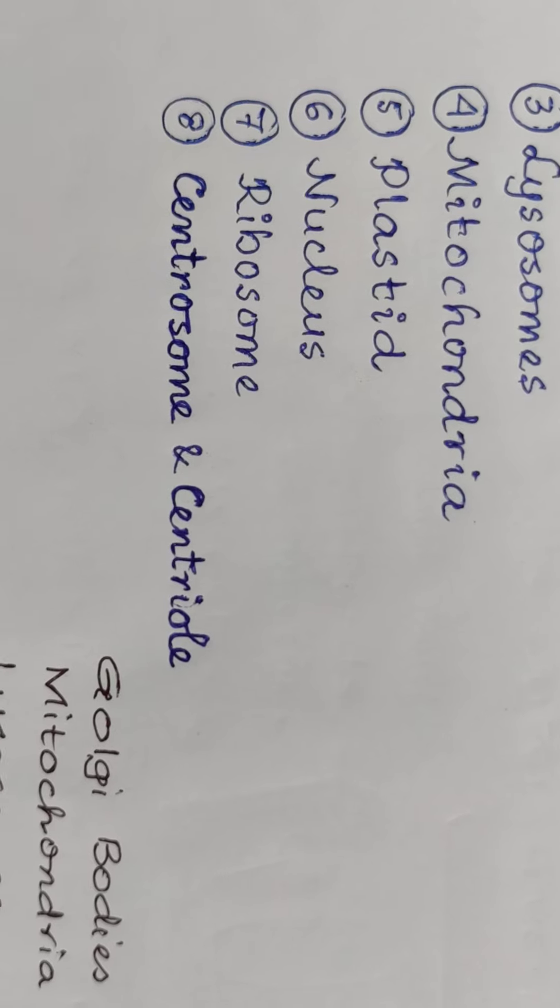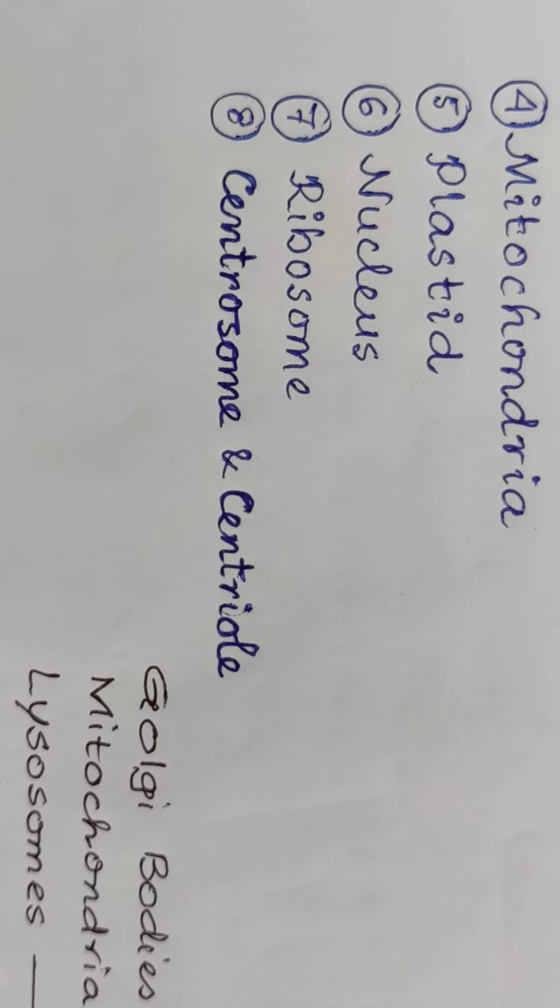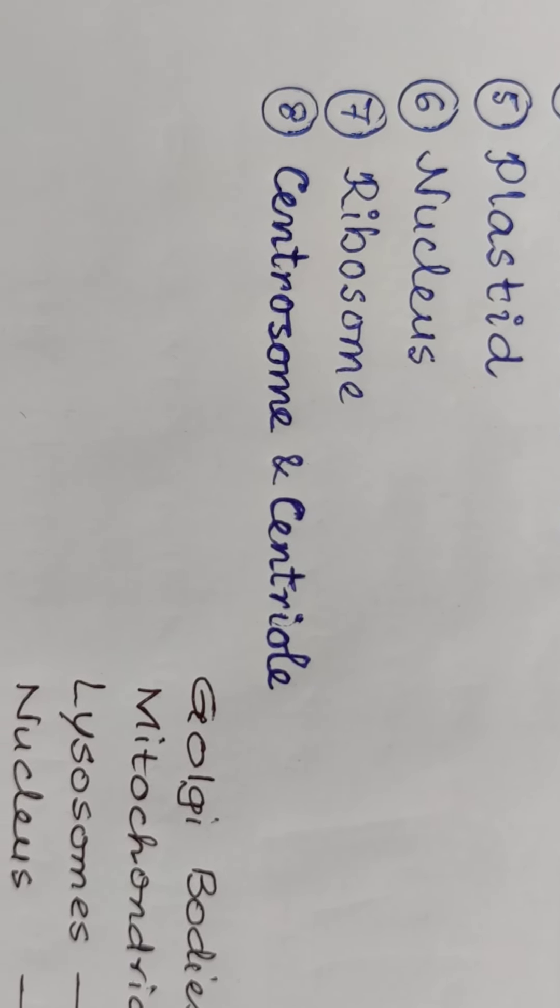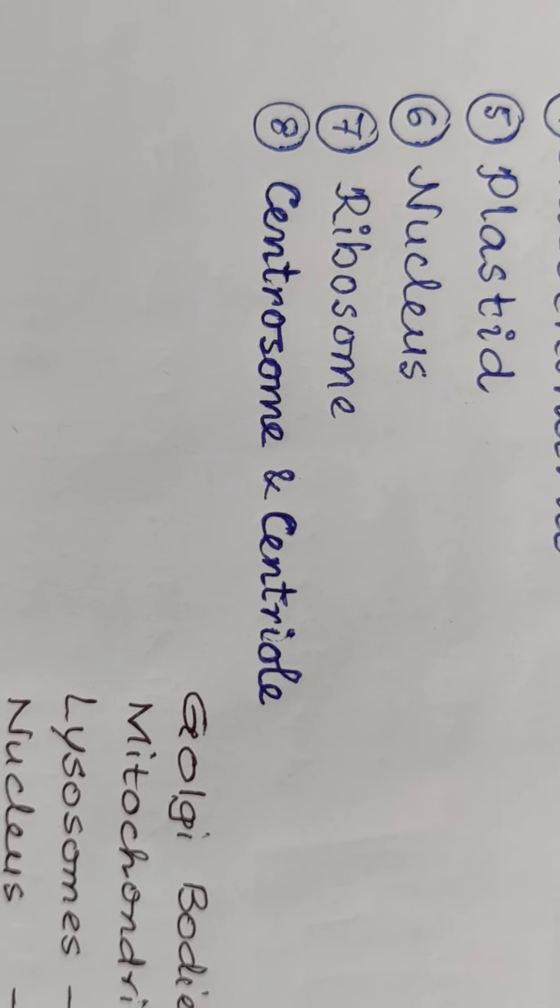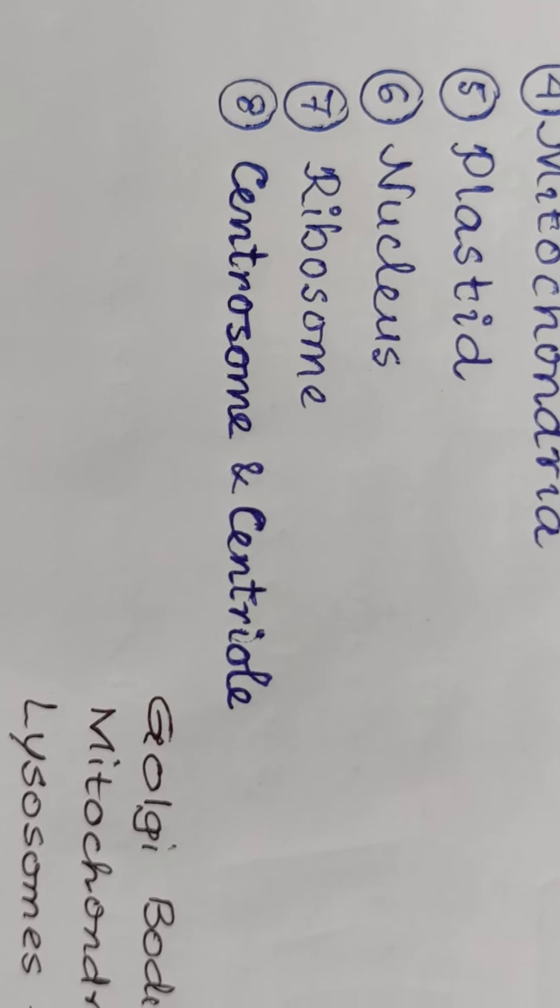Then plastids, which are only present in plant cells. Then comes nucleus, which has a very vital role to play in a cell. Then ribosomes, and then comes centrosome with centrioles, which are only present in animal cells.